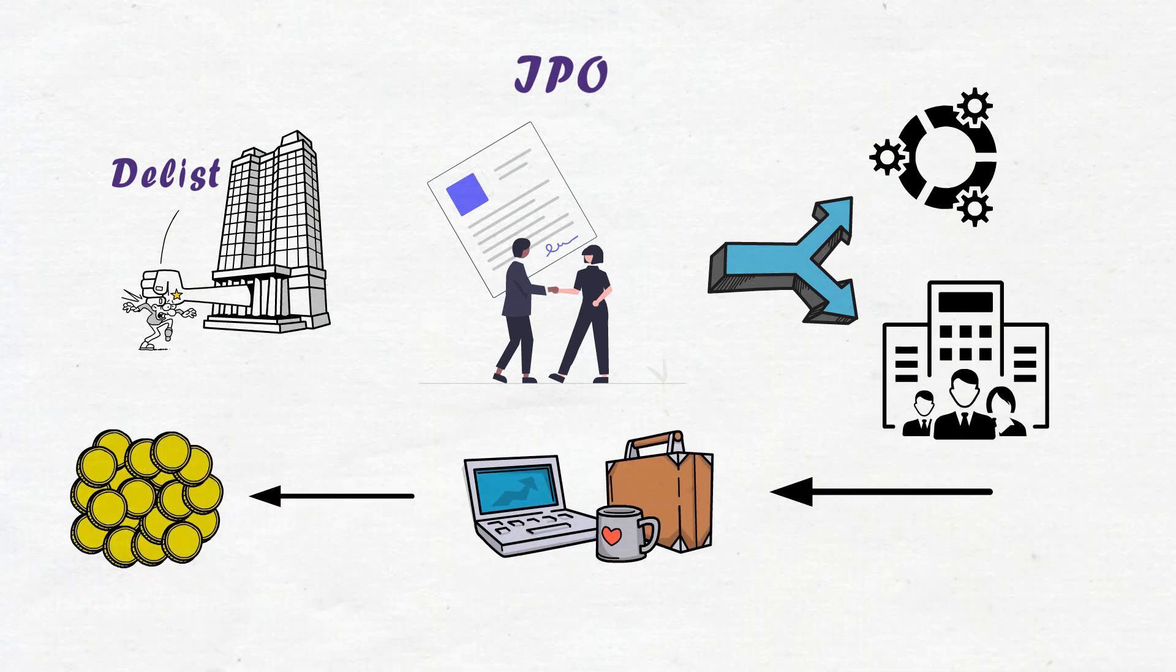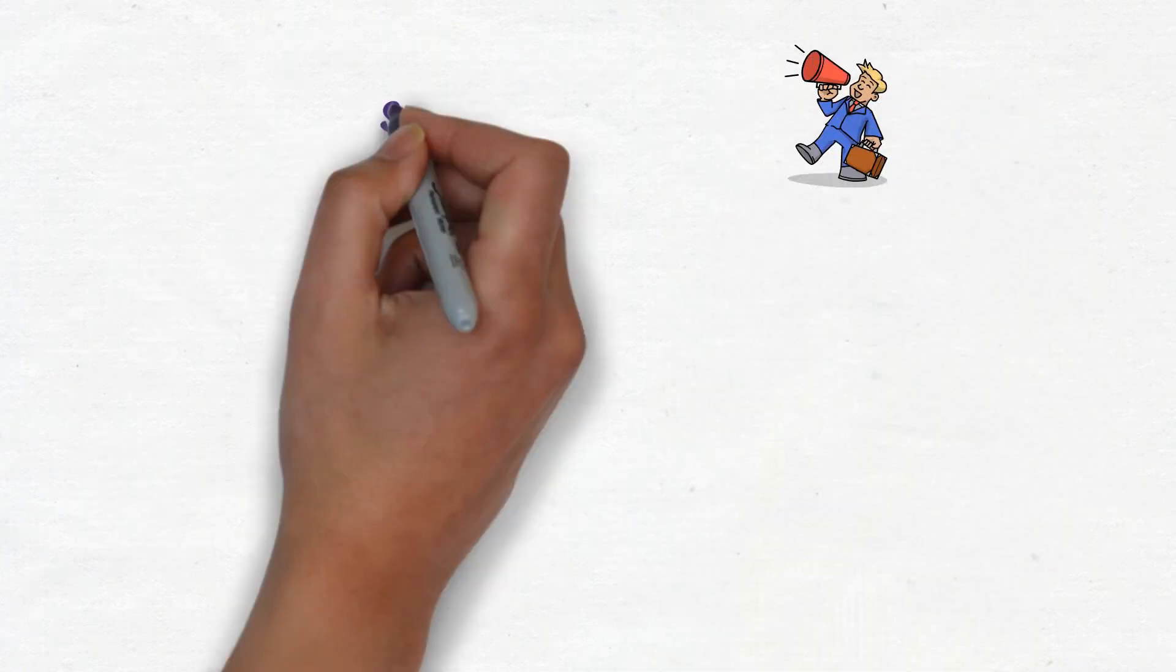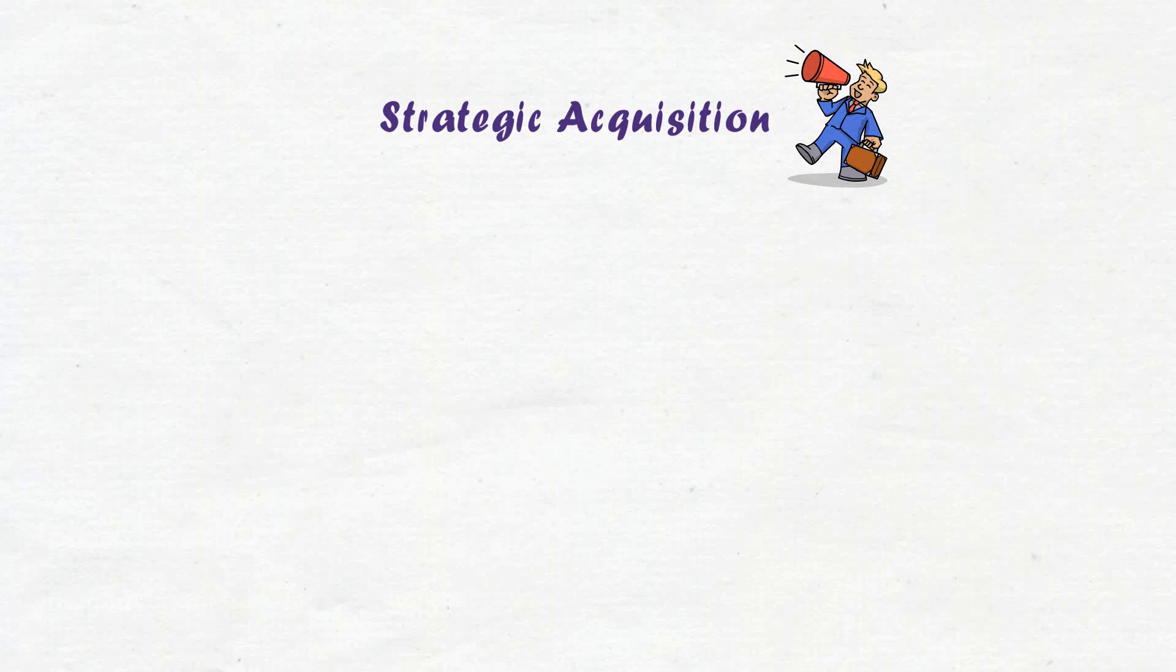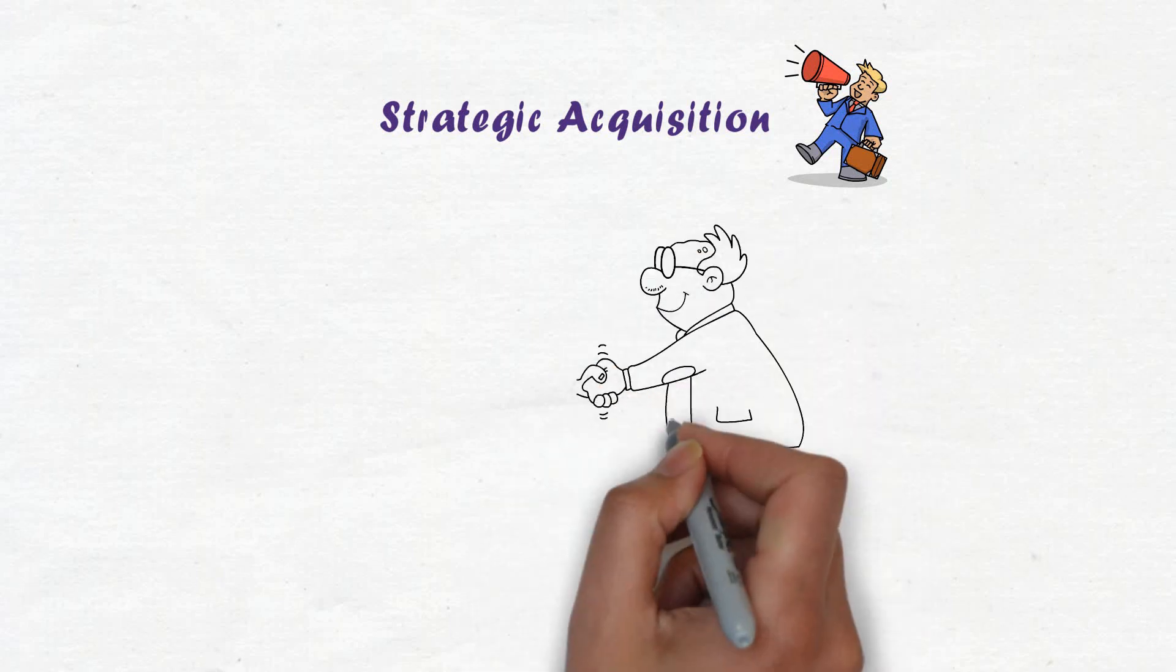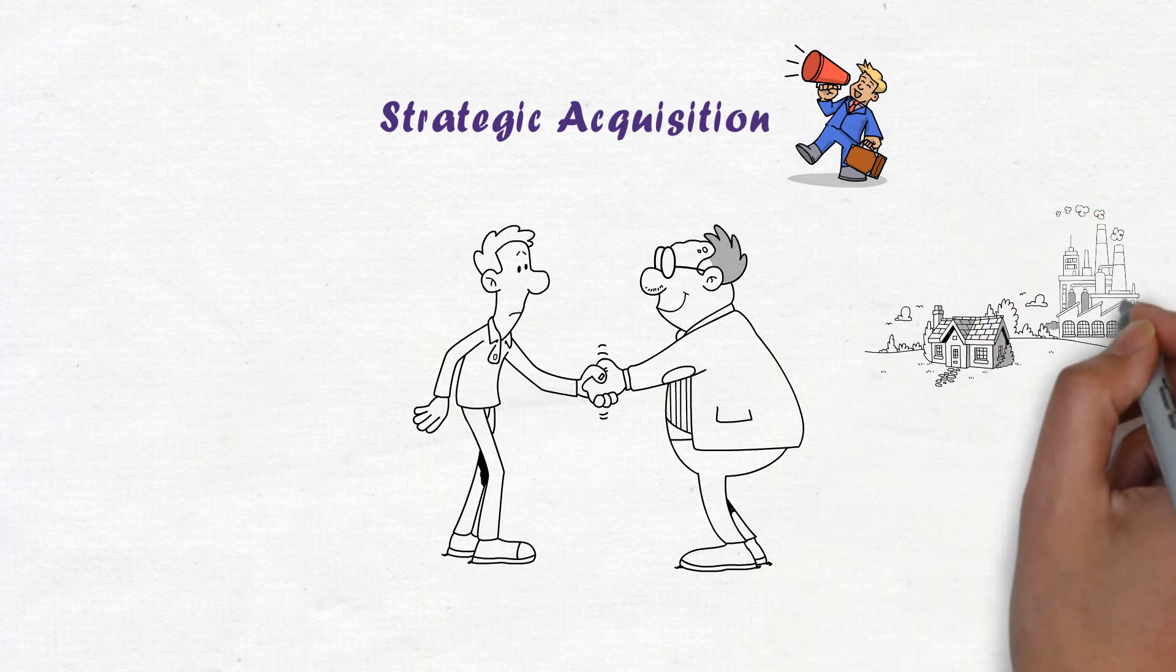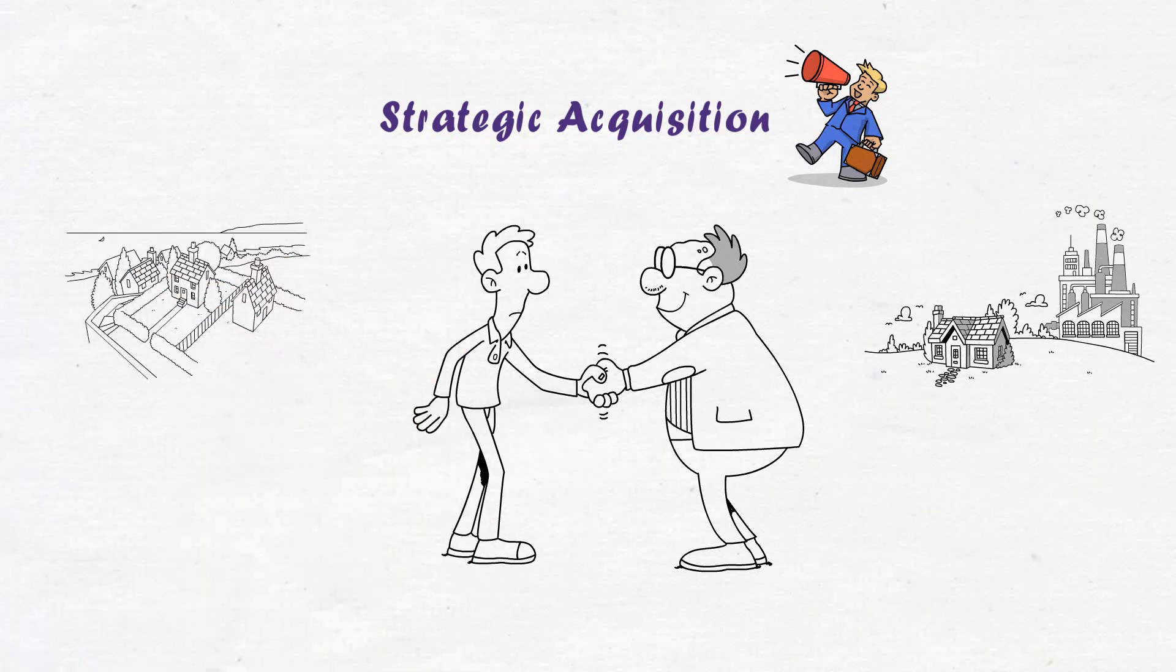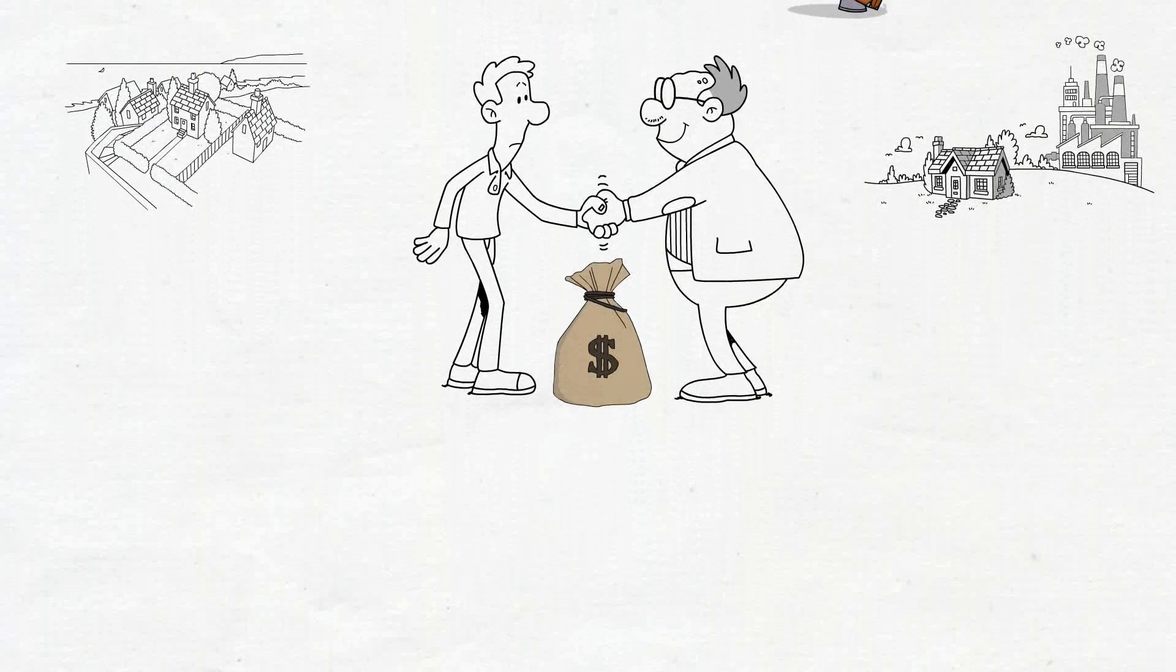The fourth one is strategic acquisition. This is one of the most popular exit routes for private equity funds. The buyer will usually have a strategic advantage in acquiring this business as they both may complement each other. For this reason, the buyer will often pay a premium to acquire such a business.